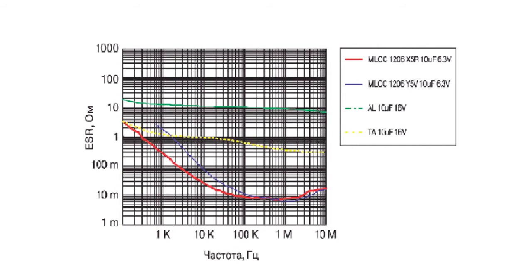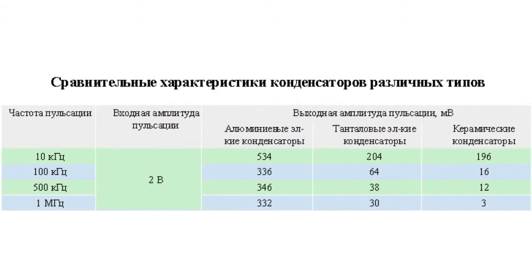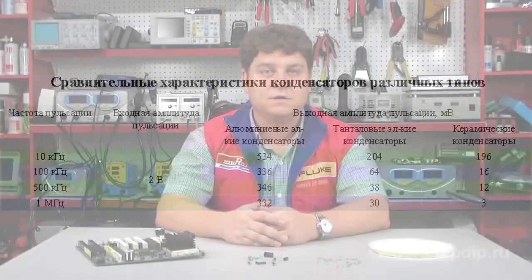This allows, in some cases, using smaller capacitance rated values to level voltage ripples in order to achieve the same effect. Here is the data about the differences in values of spurious sinusoidal ripples of various frequencies produced by capacitors of different types but with the same capacitance of 10 µF. Thus, a ceramic capacitor with a capacitance of 1 to 2.2 µF can be used to provide the same effect.